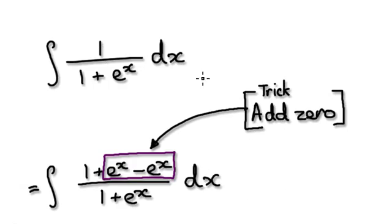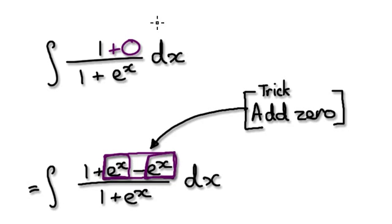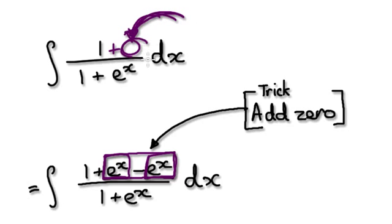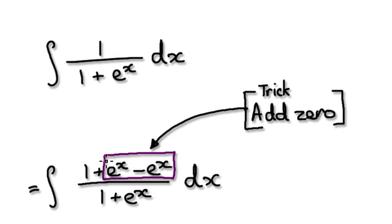To do this, use this technique: add zero. You're adding the same amount and then taking away the exact same amount, so you're in effect adding zero. We use this trick very often, so bear it in mind — you might use it again in the future.